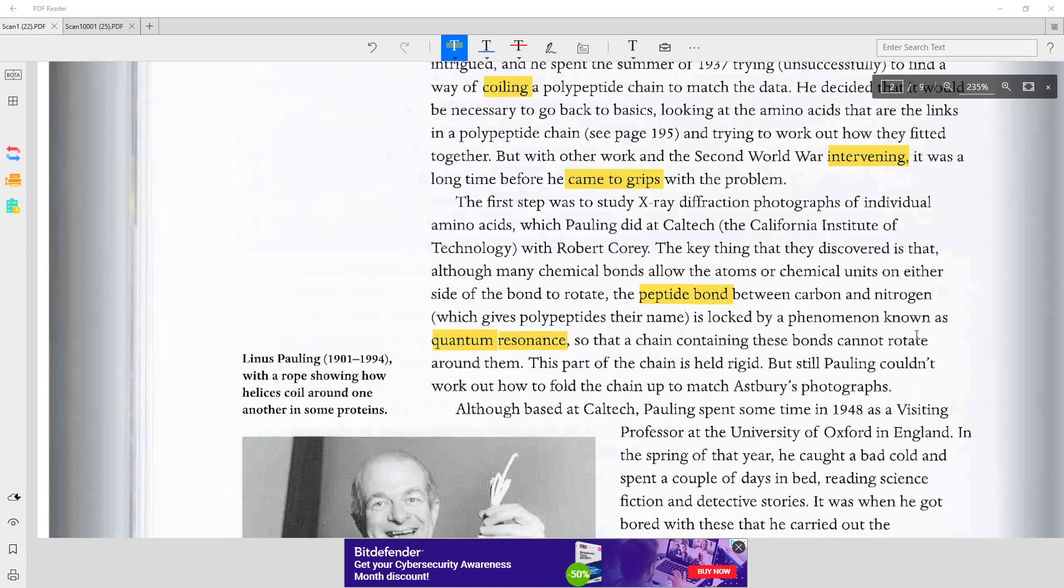The key thing that they discovered is that although many chemical bonds allow the atoms or chemical units on either side of the bond to rotate, the peptide bond between carbon and nitrogen, which gives polypeptides their name,